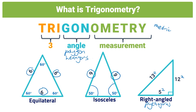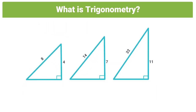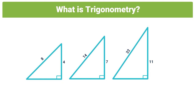Trigonometry isn't something new — but this is just the tip of the iceberg. The bread and butter of trigonometry lies in the relationship between the ratios of the sides of the triangle and the angles within it. I have three triangles on the screen, and you can see that 8 is double 4, 14 is double 7, and 22 is double 11. The ratio between one side and the hypotenuse is the same in each triangle.